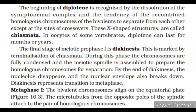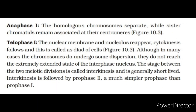Metaphase I: the bivalent chromosomes align on the equatorial plate. The microtubules from the opposite poles of the spindle attach to the pair of homologous chromosomes. Anaphase I: the homologous chromosomes separate, while sister chromatids remain associated at their centromeres. Telophase I: the nuclear membrane and nucleolus reappear. Cytokinesis follows and this is called the dyad of cells. Although in many cases the chromosomes do undergo some dispersion, they do not reach the extremely extended state of the interphase nucleus. The stage between the two meiotic divisions is called interkinesis and is generally short-lived. Interkinesis is followed by prophase II, a much simpler prophase than prophase I.